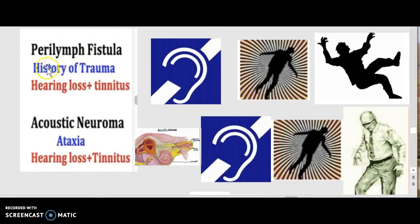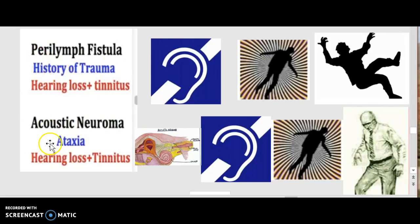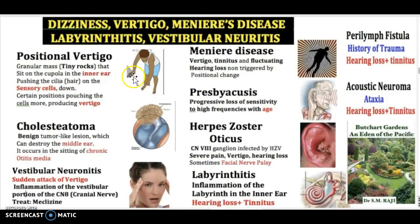For perilymph fistula and acoustic neuroma, there is one key difference between the two. They both generally cause hearing loss and tinnitus, but perilymph fistula comes with a history of trauma, whereas acoustic neuroma is associated with a history of ataxia. Here is a summary of everything we have just learned today.